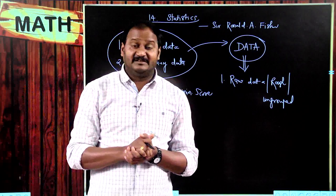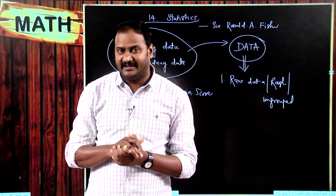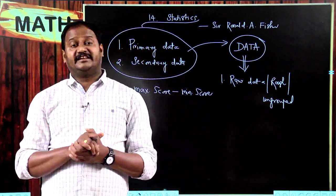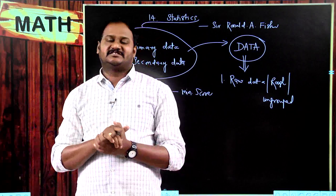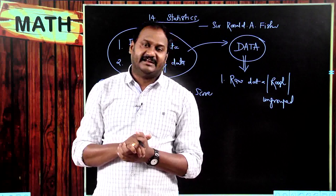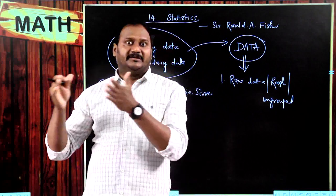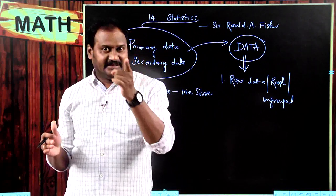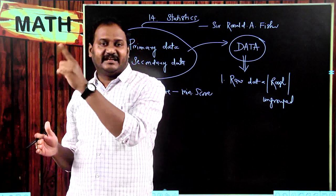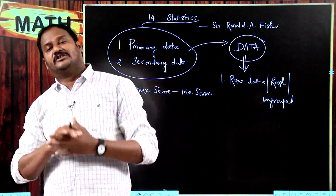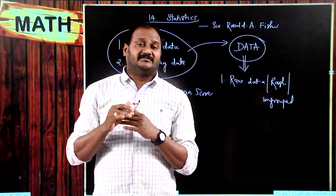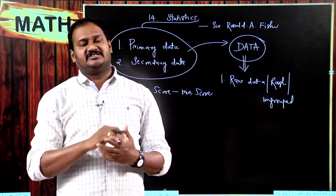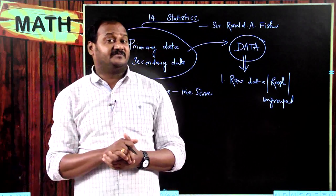Now, an interesting question: what is the range of the first 10 whole numbers? You might say 10, but that is wrong. Whole numbers start from 0, so the first 10 whole numbers are 0, 1, 2, 3, 4, 5, 6, 7, 8, 9. So 9 is the tenth whole number. The range is 9 minus 0, which equals 9.